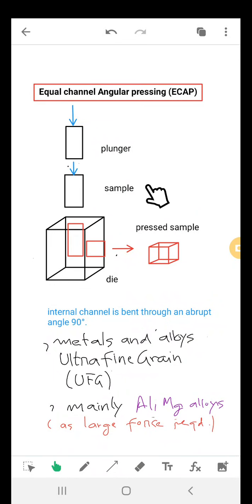Hello students, today we are going to discuss Equal Channel Angular Processing (ECAP). It is a method to produce nanoscale fine materials. In this equal channel angular processing, we have a plunger and a sample, and the internal channel is bent through an angle of 90 degrees.